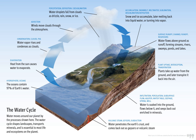In doing so, the water goes through different forms: liquid, solid ice, and vapor. The water cycle involves the exchange of energy, which leads to temperature changes. When water evaporates, it takes up energy from its surroundings and cools the environment. When it condenses, it releases energy and warms the environment.